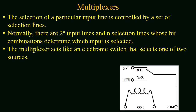The selection of a particular input line is controlled by a set of selection lines. Normally we have 2^n input lines and corresponding to the input lines we have n selection lines whose bit combination determines which input has to be selected.